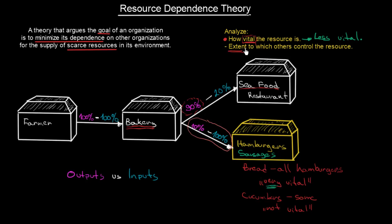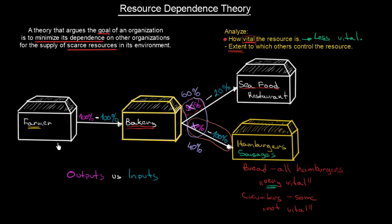Secondly, we can work on the extent to which others control the resource. We can try to develop a better relationship with our bakery and change the ratio — instead of 90% going to the seafood restaurant and 10% to us, we increase our production so that 40% comes to us and only 60% goes to the seafood restaurant, making us a much more important customer. Alternatively, we can try to make our own bakery, ensuring it always produces for us. Then we would no longer depend on the external bakery — but we would depend on the farmer.